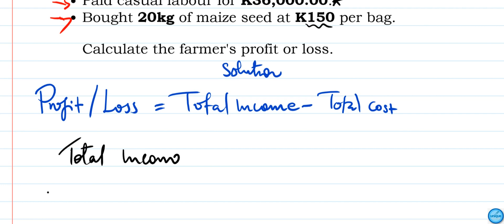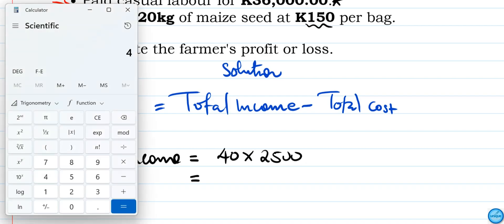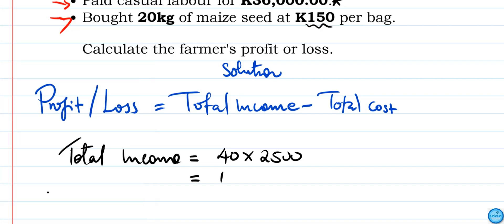We're going to do 40 multiplied by 2,500. So this gives us K100,000.